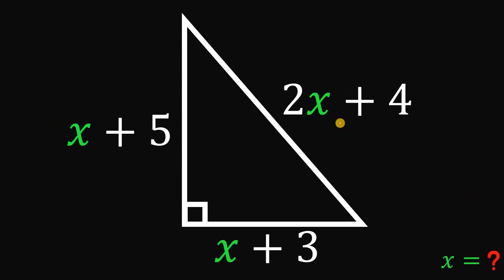So given this right triangle with the sideline 2x plus 4, x plus 5, and x plus 3, our goal is to find the value of x so that we have a legit right triangle.